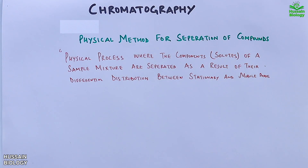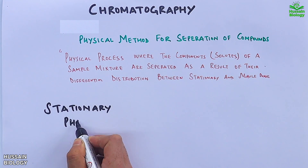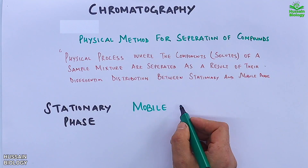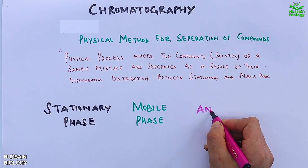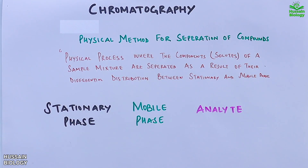In order to understand chromatography, we have three important terms to remember: stationary phase, mobile phase, and analyte.